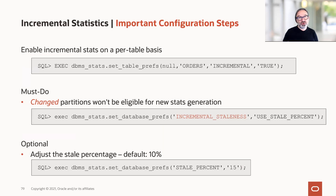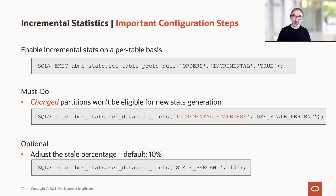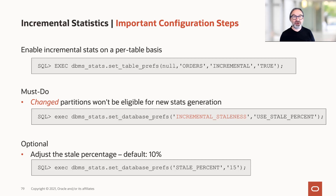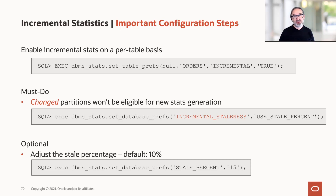A few configuration steps are needed. By default, incremental stats are not on, so you have to turn them on. We recommend turning it on at a per-table level rather than at the database level. This is done with the first call: set table prefs for the orders table, incremental true.